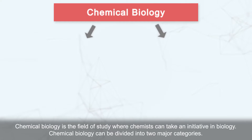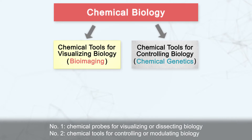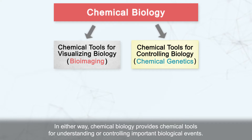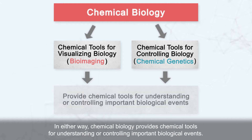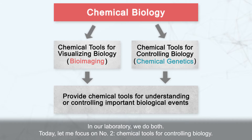Chemical biology can be divided into two major categories. Number one: chemical probes for visualizing or dissecting biology. Number two: chemical tools for controlling or modulating biology. In either way, chemical biology provides chemical tools for understanding or controlling important biological events. In our laboratory, we do both.